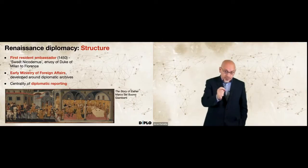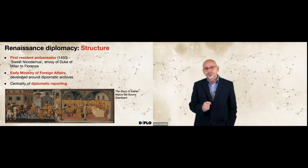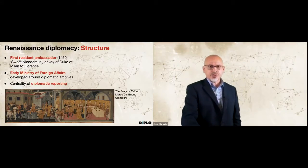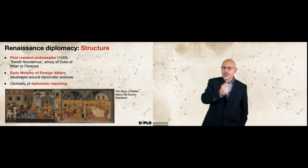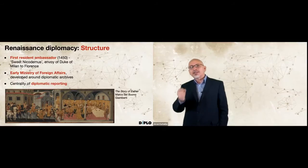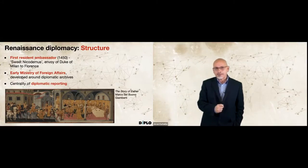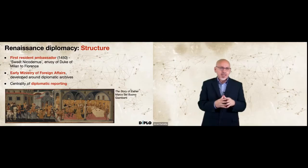Diplomats at that time needed good manners and good oratory skills. At the end of the 15th century, Ludovico Sforza, Duke of Milan, stated that the word of a Prince was seen in the men he sent to represent him abroad. Back in the capital, new proto-ministries of foreign affairs started emerging. They first emerged around archives of diplomatic reports, and later transformed into a more sophisticated system for collecting and analyzing information and coordinating diplomatic actions.